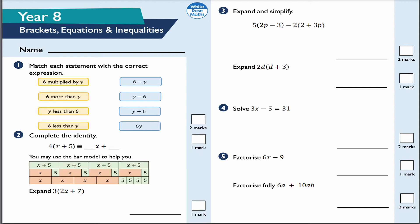We're going to start with question number one: match each statement with the correct expression. '6 multiplied by Y' — well, that's written as 6Y, so this one matches up with that. '6 more than Y' — that's the same as Y plus 6, or it might be written as 6 plus Y. Either way is the correct convention — things can be written slightly differently but mean the same thing. So Y plus 6 is going to be this one.